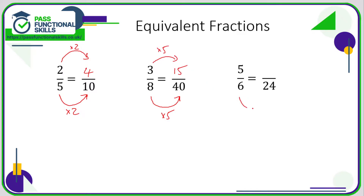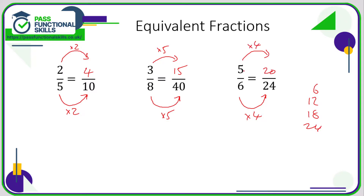For six into twenty-fourths — if you're not confident with your tables, just write them out: six, twelve, eighteen, twenty-four. That's four steps, so it's times four. A lot of people make the mistake of writing four in as the top number, which is wrong. We need to multiply the top by four: four times five is twenty. So five sixths is equivalent to twenty twenty-fourths.